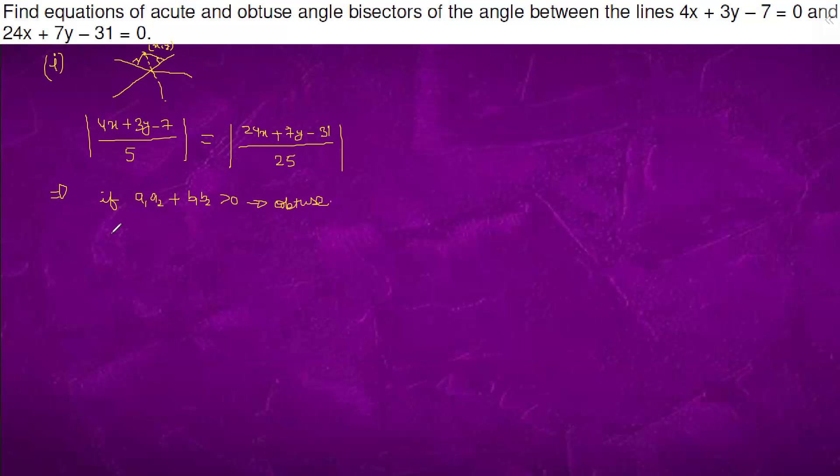So, if we go with 4x plus 3y minus 7 equals to 24x plus 7y minus 31 upon 5. So, here a1a2 plus b1b2 is also positive. a1b1 is also positive. So, this is obtuse.